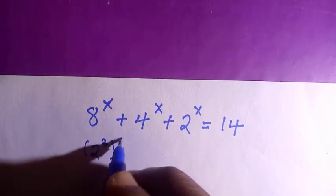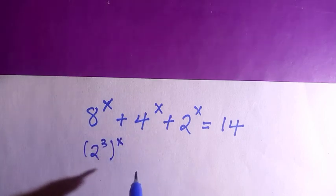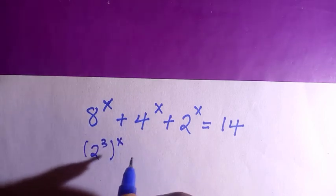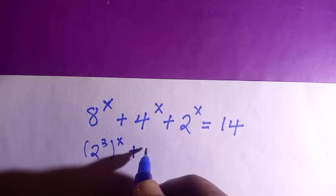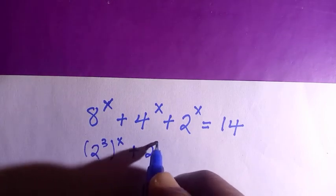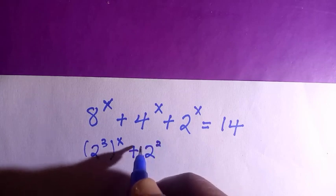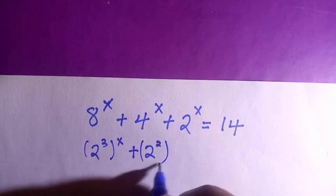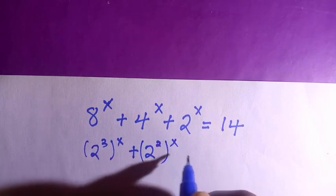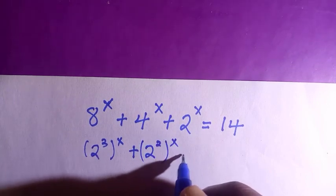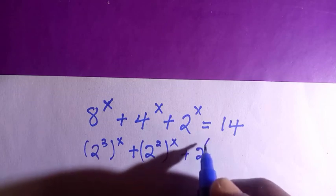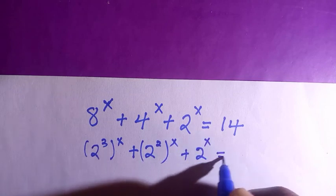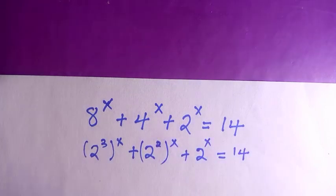If you write 8 in index form, it's 2 to the power of 3, so we have 2 to the power of 3 raised to the power of x, plus 2 to the power of 2 raised to the power of x, while the last one is 2 to the power of x, all equal to 14.